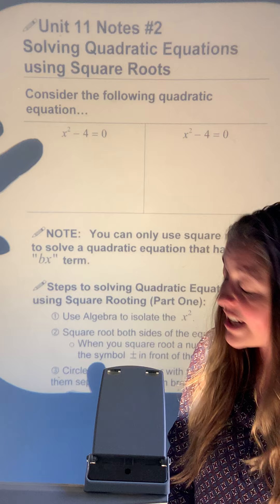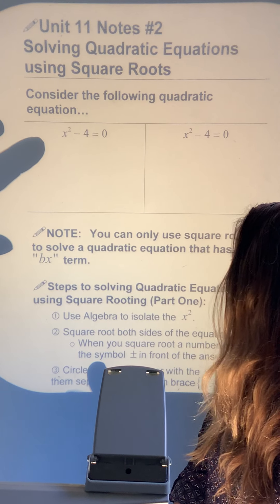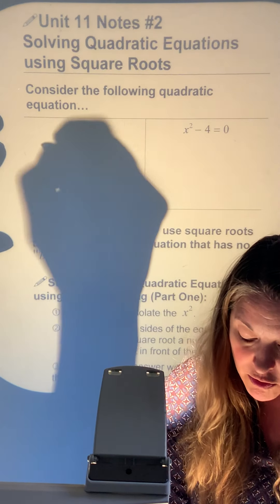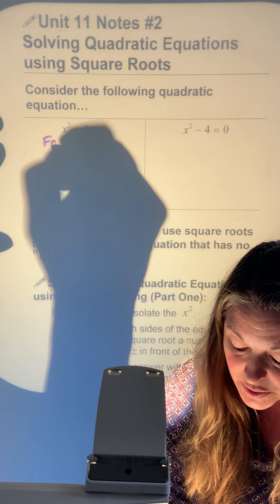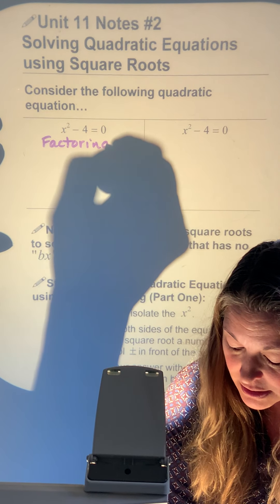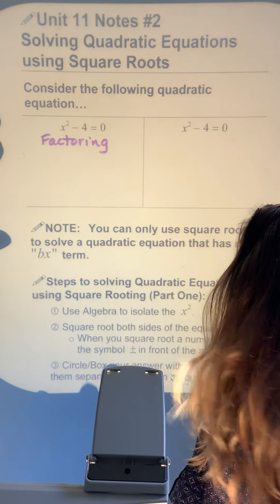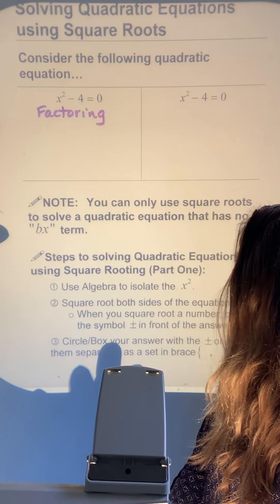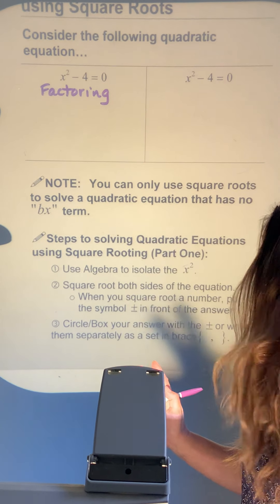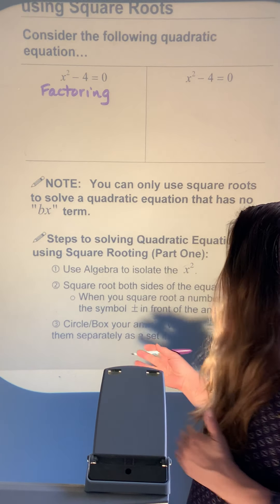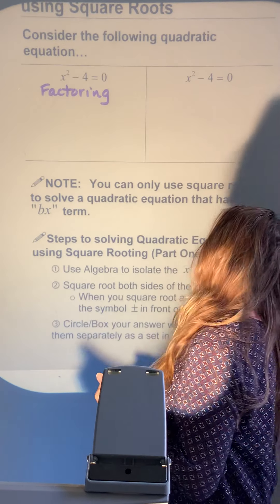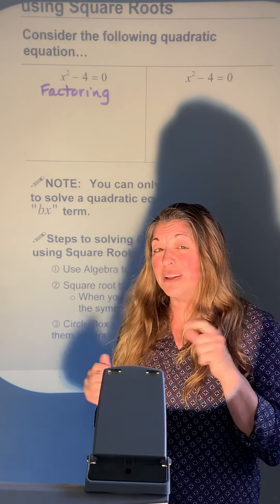Let's take a look at x squared minus four equals zero. If we were to solve it using factoring, we might notice it only has two terms. I don't see a GCF, or greatest common factor, I could pull out.